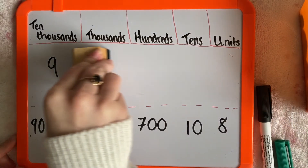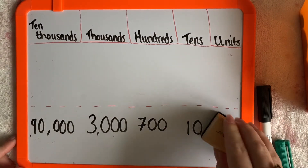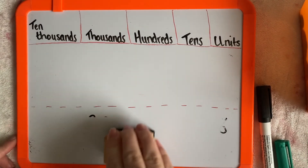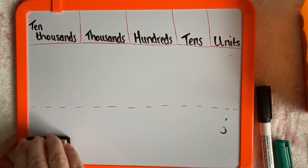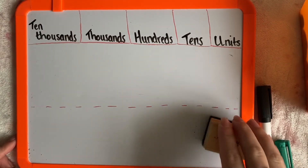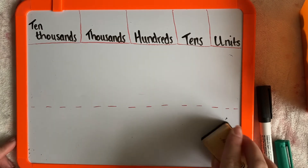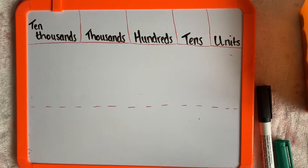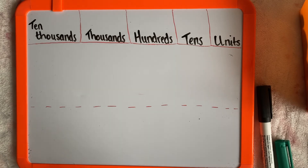I'll go through one more example for you. Remember, if you're a little bit confused with any of the vocabulary, such as digits, you can go back to my last video. I'll leave the link in the description below. Last example then.